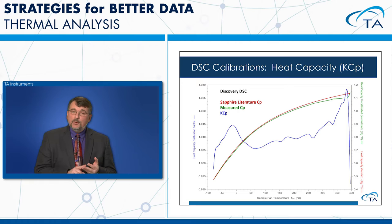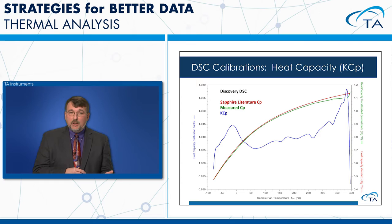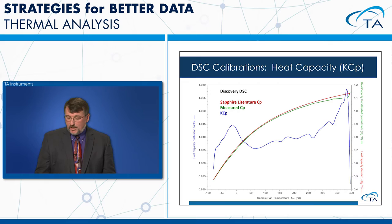The heat capacity calibration constant KCP changes slightly with temperature — from about 0.99 to 1.03 J/(g·°C) — a very small range. But to get the best measurement of heat capacity, we want to measure and account for that variation.